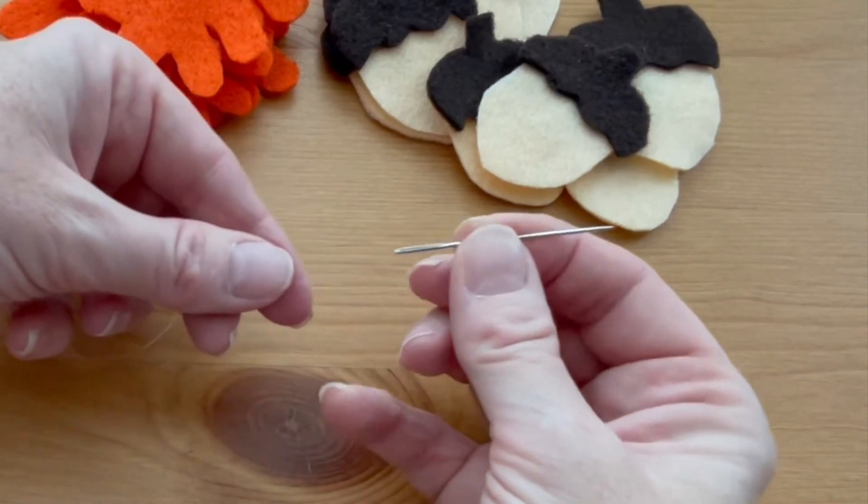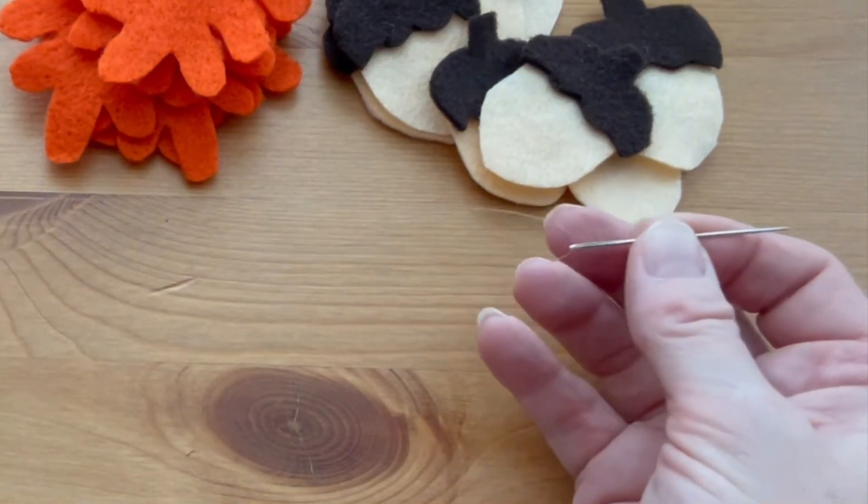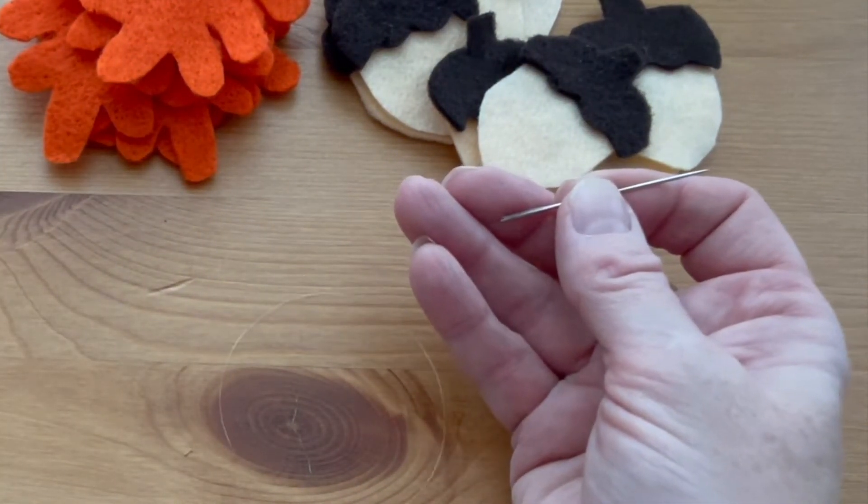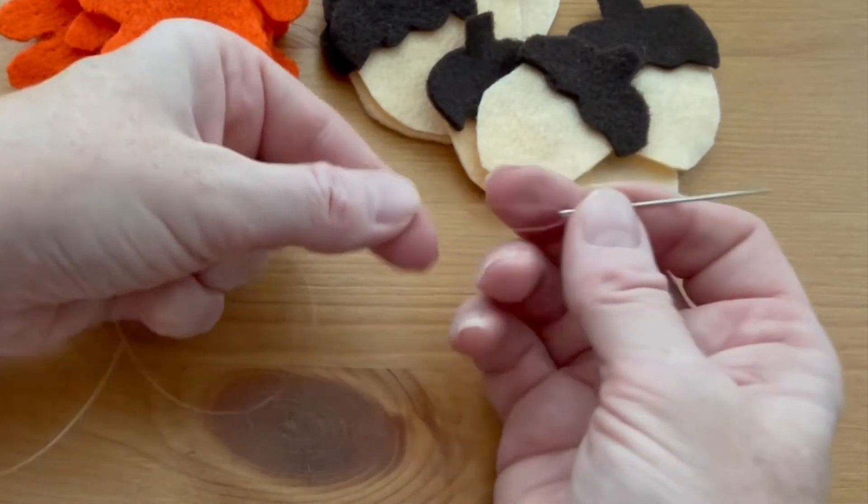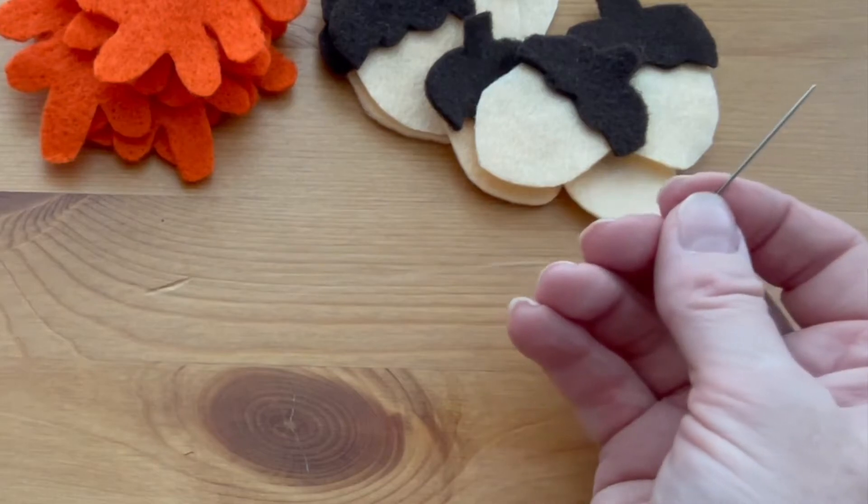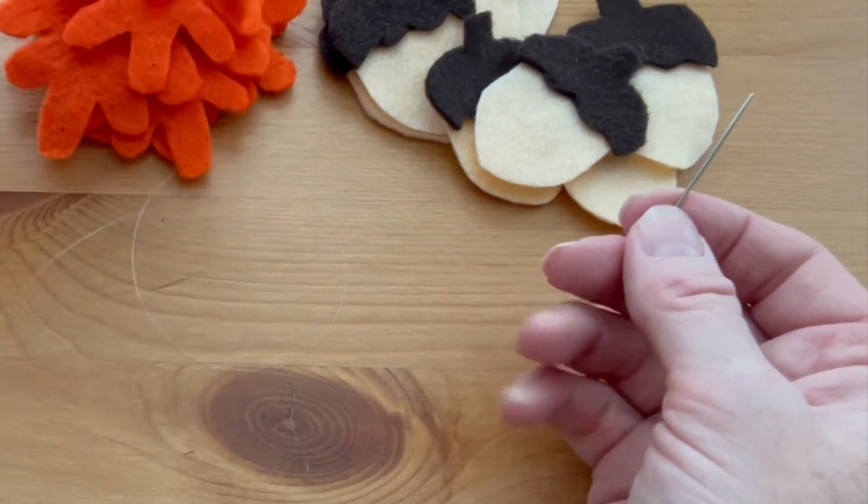Once you've got all of your felt pieces ready, thread the monofilament or cord onto your needle and cut it for as long as you would like the garland to be, leaving just a little bit extra so you have extra space on the ends.